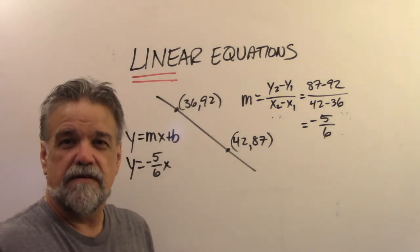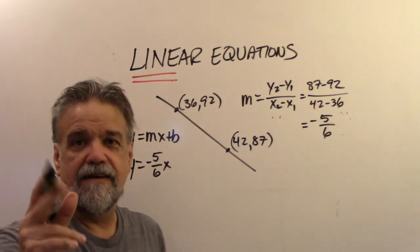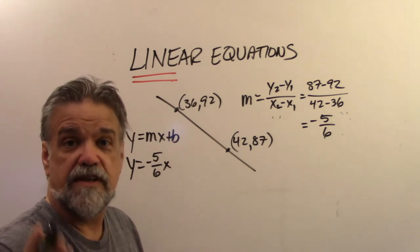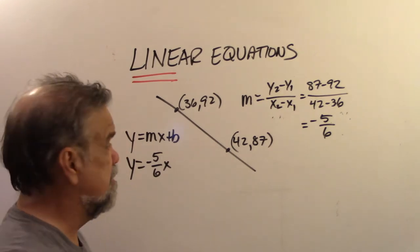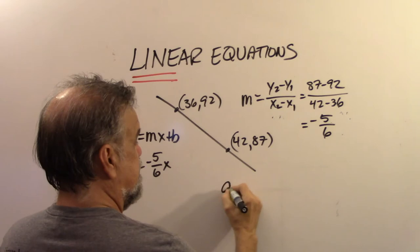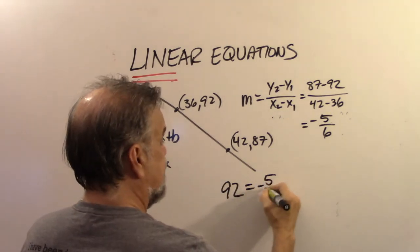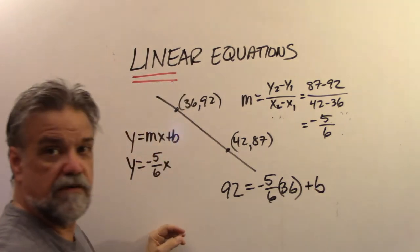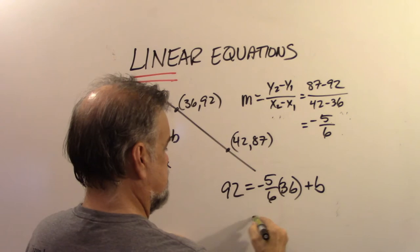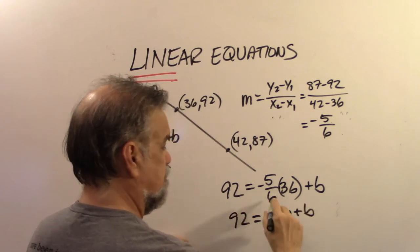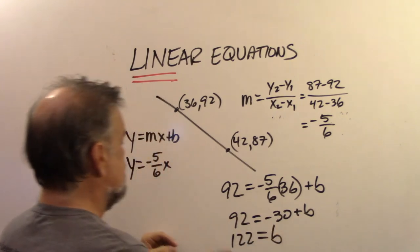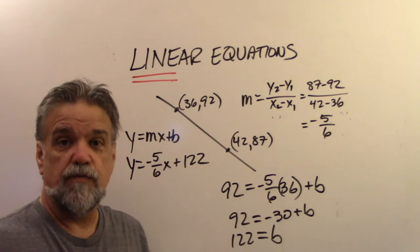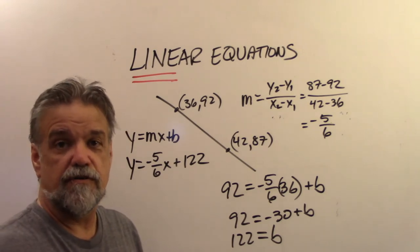Now I need to figure out b. I'll take either point and plug it into the formula, since any point on the line must satisfy the equation. Using (36, 92): 92 = −5/6 times 36 plus b. That's −30 plus b = 92, so adding 30 to both sides gives b = 122. The equation is y = −5/6 x + 122. If I had used (42, 87), it would also work — verify that on your own.